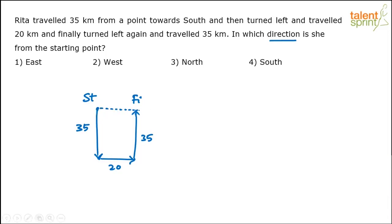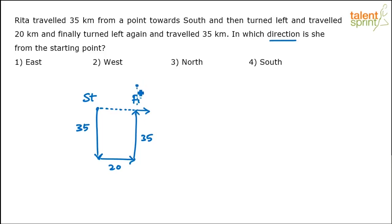Yes or no? She's in the east direction. Suppose if the last segment is 40 kilometers instead of 35 — what happens? She will overshoot this line and come somewhere here.